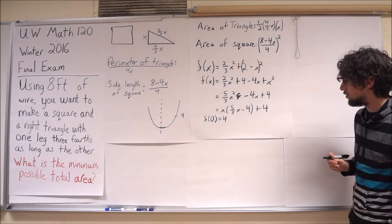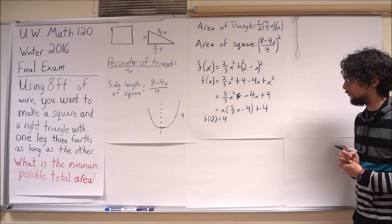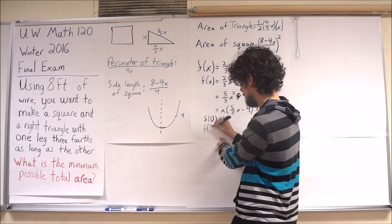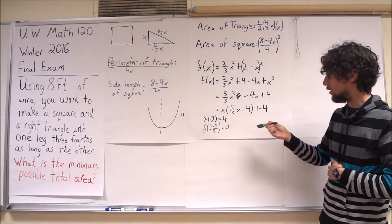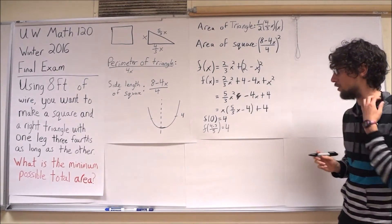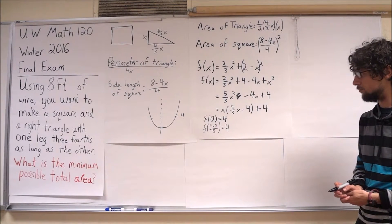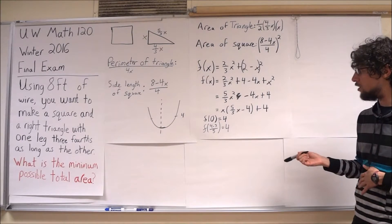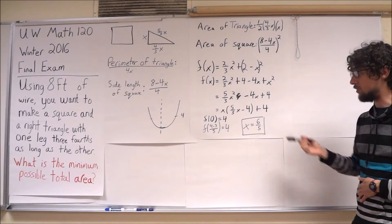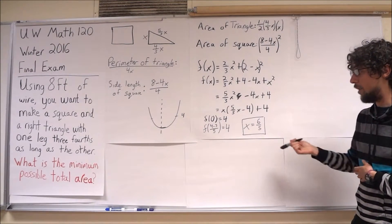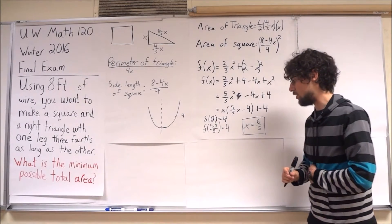I think if I make x be 12/5, if I plug in 12/5, then my threes will cancel, my fives will cancel, and I'll have four minus four inside the parentheses there. So, then I know that my minimum is at x equals 6/5. In particular, my minimum is right in between x equals zero and x equals 12/5.